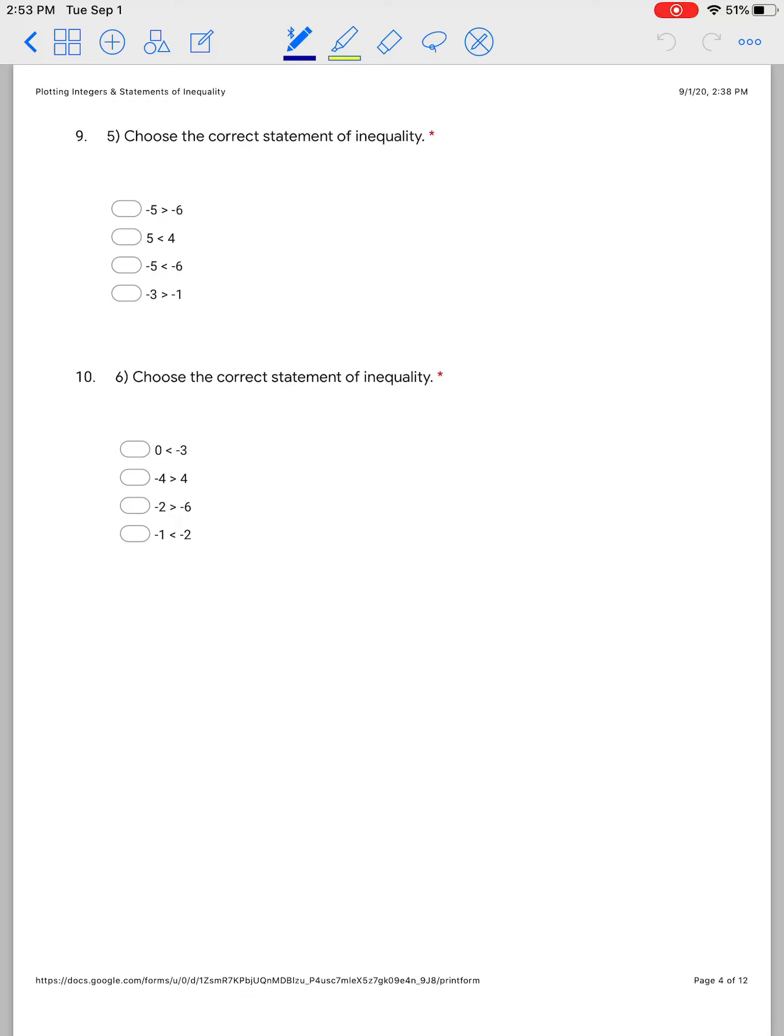So for example, if we're looking at number 5, number 5 says to choose the correct statement of inequality. So I'm going to look down the list there and I see it's the first one: negative 5 is greater than negative 6. This is my true answer.